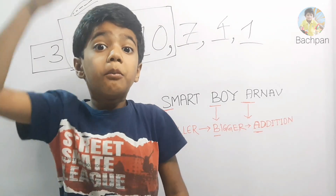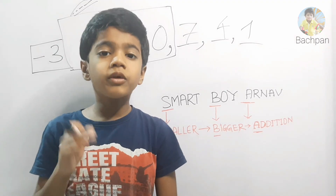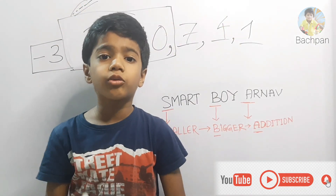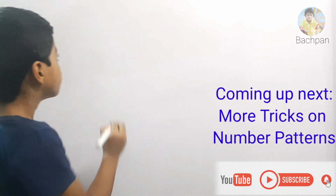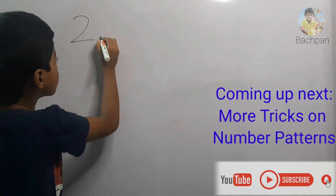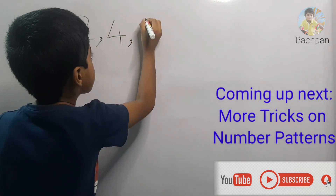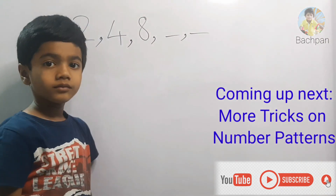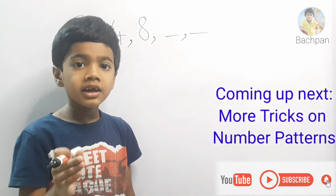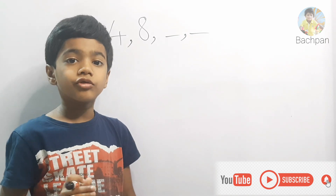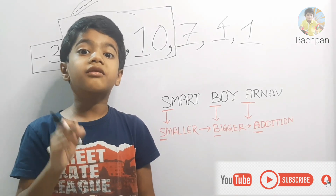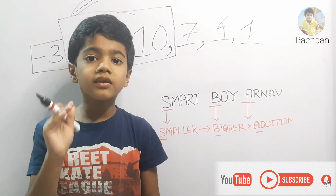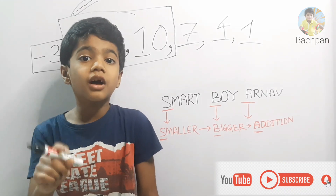Please note there are more complex number patterns — we will learn those in my next video. But don't worry, this video covers everything for class 1 students. As a preview for next video: 2, 4, 8, dash, dash, dash — I will explain this trick in my next video, so stay tuned. If you have any doubts, please write in the comment box. Hope you like my video — please like, share, and subscribe, and press the bell icon.